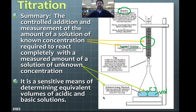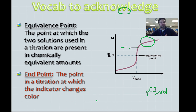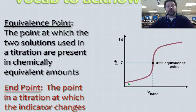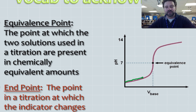Titration is a very sensitive means for determining equivalent values of acidic and basic solutions — sometimes it's a single drop that takes you from the acidic side to the equivalence point. The equivalence point is the point at which two solutions used in a titration are present in chemically equivalent amounts. Imagine adding a known base from the burette slowly into an unknown acid in the flask, seeing a very gradual increase in pH with each addition.